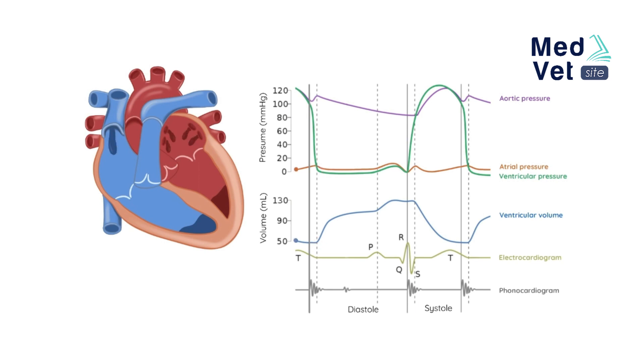Initially, blood enters from the pulmonary veins to the left atrium, filling this cavity until an increase in atrial pressure is generated, which exceeds that of the ventricle. Therefore, the atrioventricular valves open, thus initiating the ventricular filling or inflow stage.